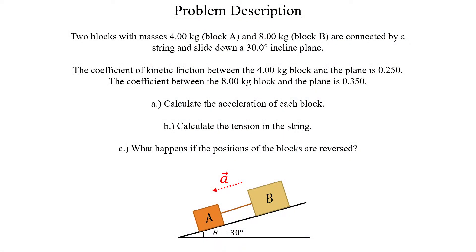Here we have two blocks, block A with mass 4 kg and block B with mass 8 kg which are connected by a string, and they are both sliding down in the same direction, a 30 degree incline plane.